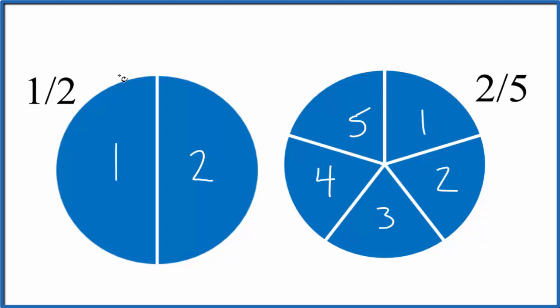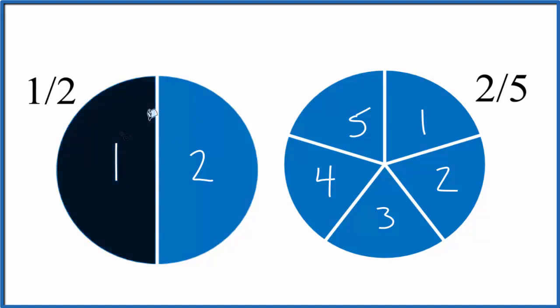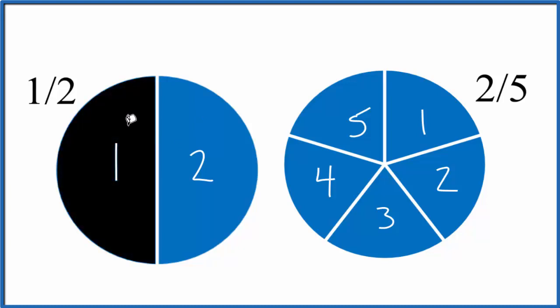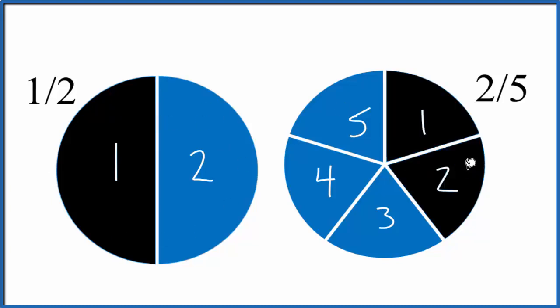Let's shade one of these pieces in, and that represents one half. It's one part of the whole thing. Over here we're going to shade in two pieces, so that's our two-fifths, two parts of the whole five pieces.